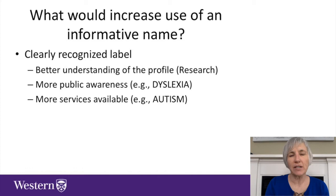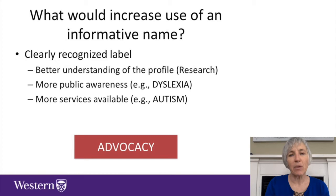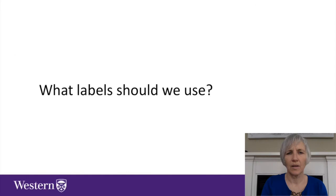It would lead to more public awareness. Think of the group with dyslexia and how effective they've been at increasing awareness of that disorder. It would lead to more services. Think of the group with autism and how effective they've been at creating resources for services. Most of you would find that family and friends know about dyslexia and autism. But how many would know about developmental language disorder? Not very many. And maybe that's because we've never told them about it. Having a clearly recognized label would lead to focused advocacy.